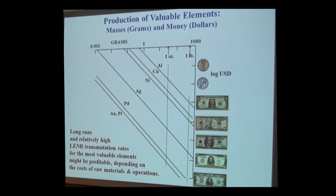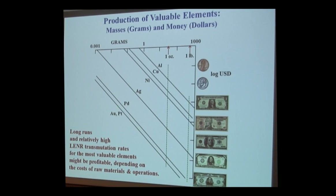This is the graph for making money. The same grams axis is plotted against cost. If you want to make an ounce of platinum or gold above $1,500 USD, long runs and relatively high transmutation rates are needed. It's also going to depend a lot on the cost of raw materials — if you're transmuting one valuable element into another, you have less margin. I won't say this isn't going to happen, but I can't see it happening in the near term.